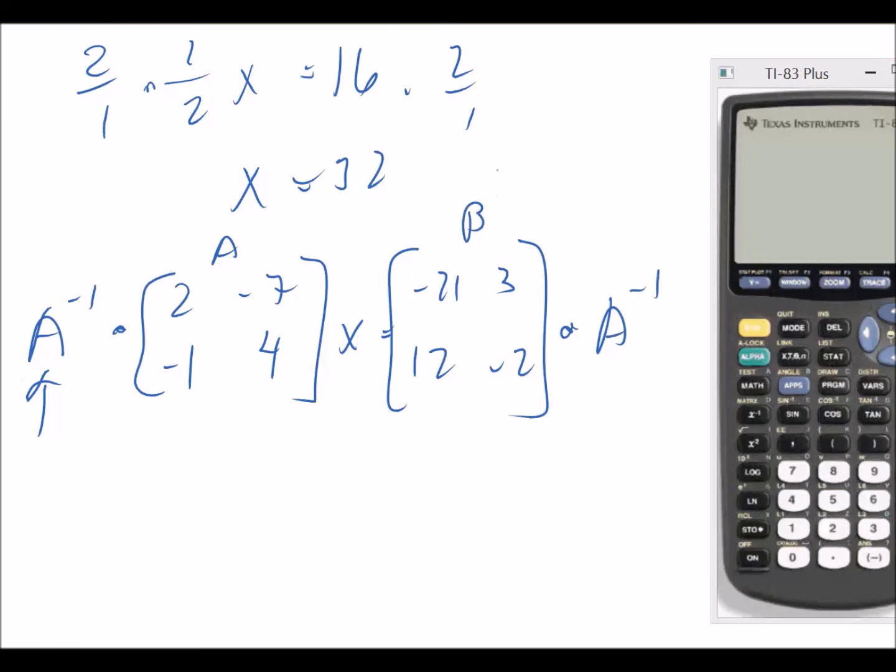So you have matrix B, we're going to call this B, times the inverse of A. We're going to be left with x equals B times A, the inverse of A. So let's plug this in.